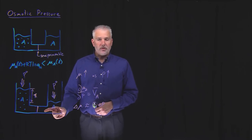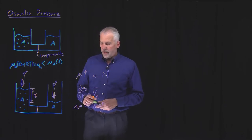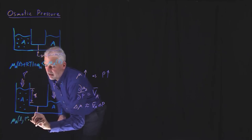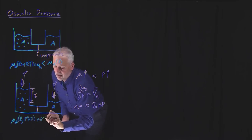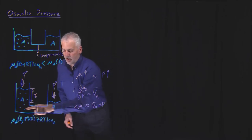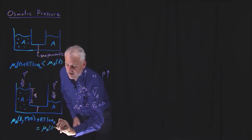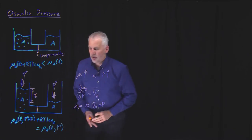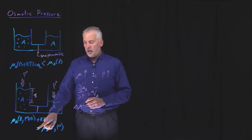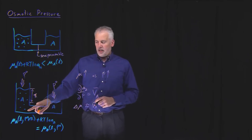When the chemical potential is equal in two different parts of a system, that system is at equilibrium. Considering both concentration and pressure effects, at equilibrium the chemical potential of the liquid at pressure p₀ + π plus the contribution from the activity of the salt solution must equal the chemical potential of the pure solvent in the liquid state at just atmospheric pressure. This extra pressure π is what we call the osmotic pressure.